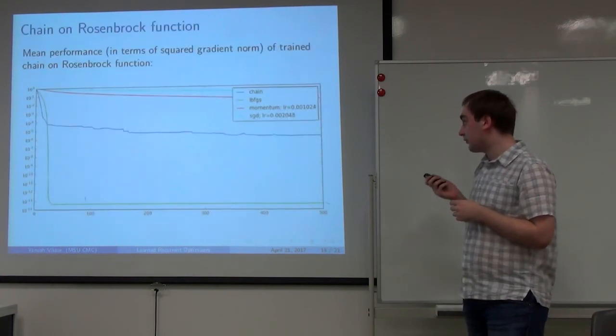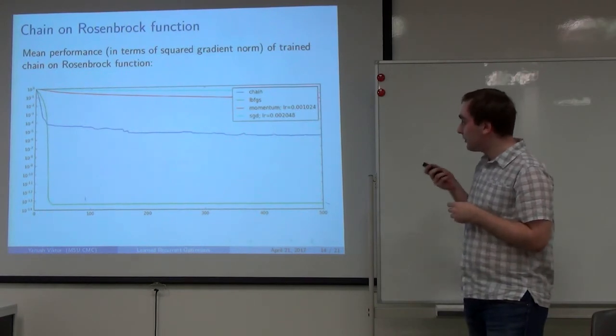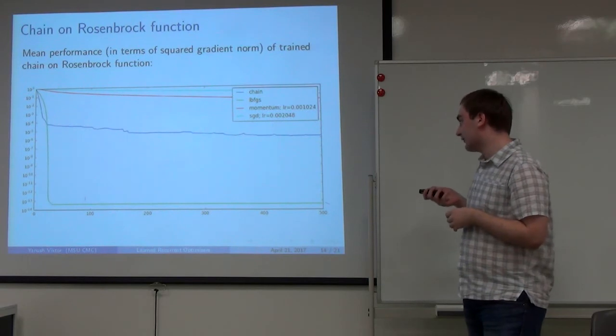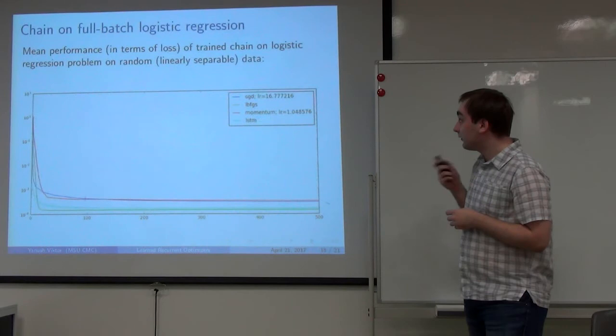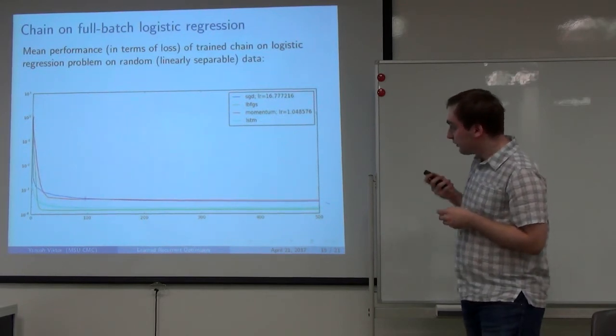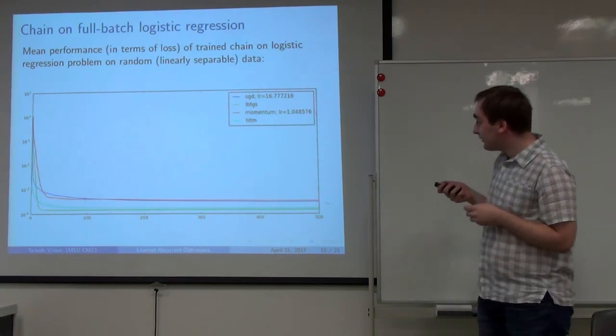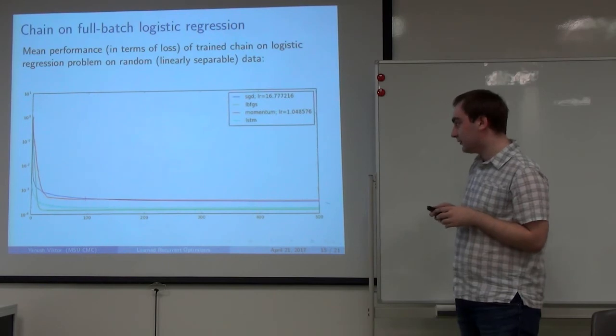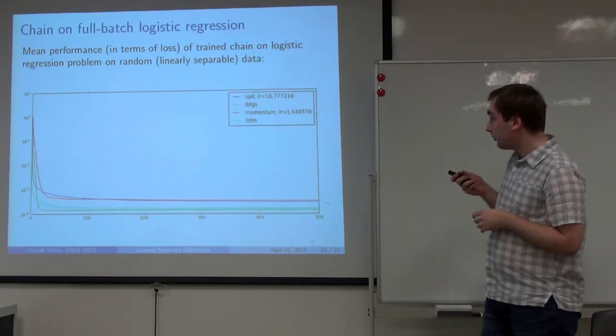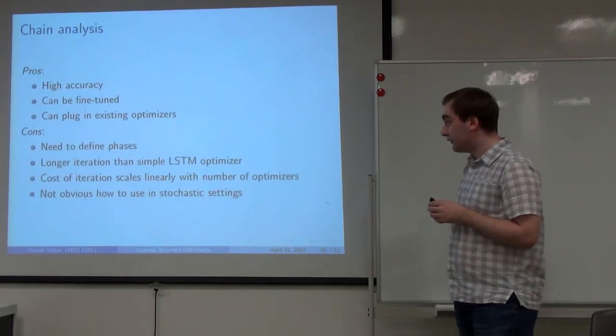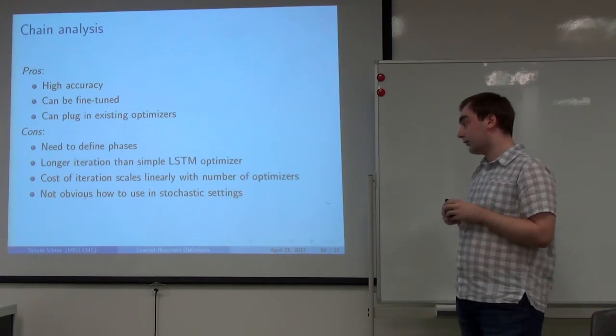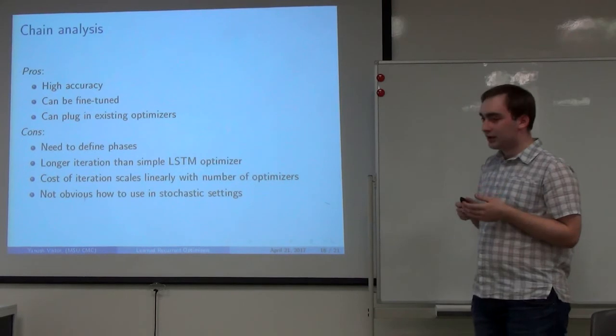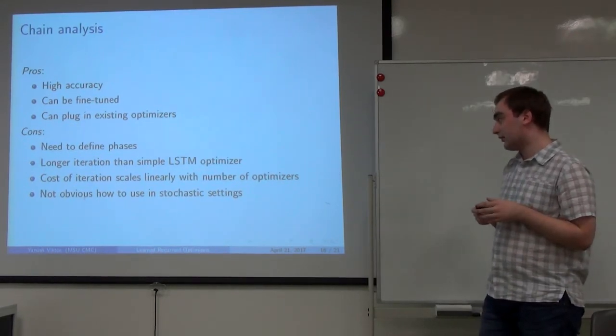These are the results on Rosenbrock function. Blue is chain. We perform better than SGD and momentum, but we can't come close to LBFGS. These are the results on full batch logistic regression. This line is LSTM chain, and we perform almost like LBFGS. What are the pros and cons of chain? It achieves high accuracy. It can be fine-tuned. Actually we can add optimizers which weren't trained somehow. For example, we could use five LSTMs and SGD in chain. But there are drawbacks: we need to define what a phase is. We have longer iteration, and cost of this iteration is linear with number of iterations. The main problem is that it's not obvious how to use this model in stochastic settings.